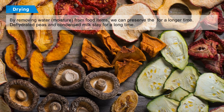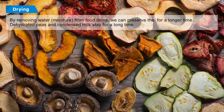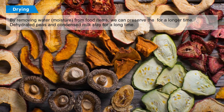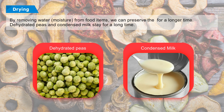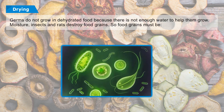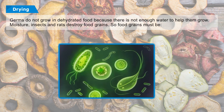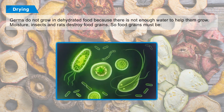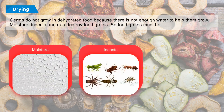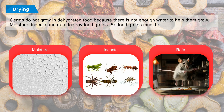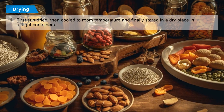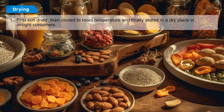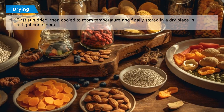Drying: By removing water and moisture from food items, we can preserve them for a longer time. Dehydrated peas and condensed milk stay fresh for a long time. Germs do not grow in dehydrated food because there is not enough water to help them grow. Moisture, insects, and rats also destroy food grains. So food grains must first be sun-dried, then cooled to room temperature, and finally stored in a dry place in airtight containers.